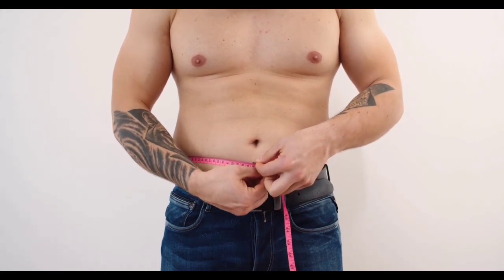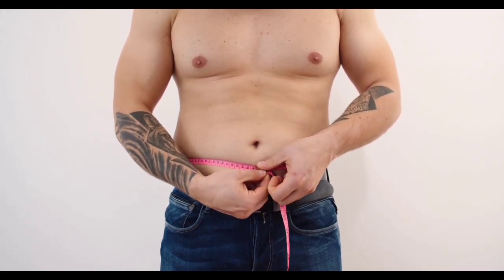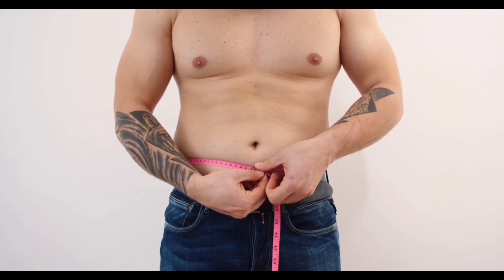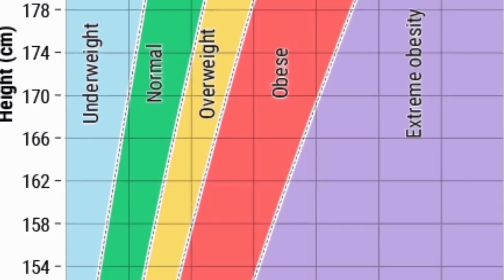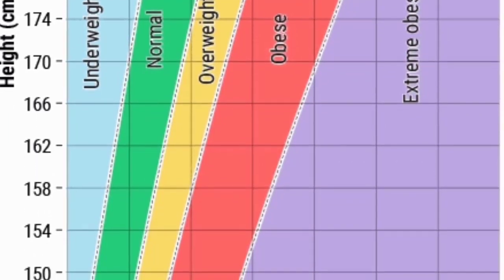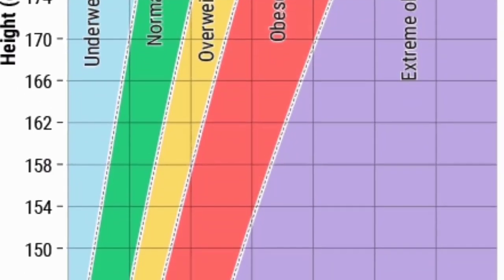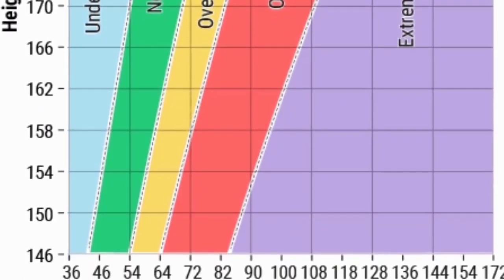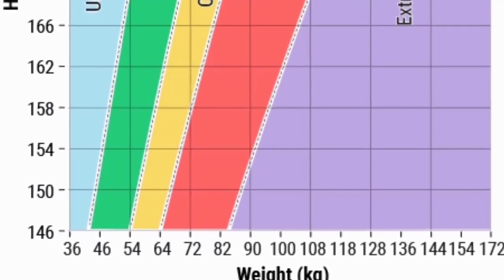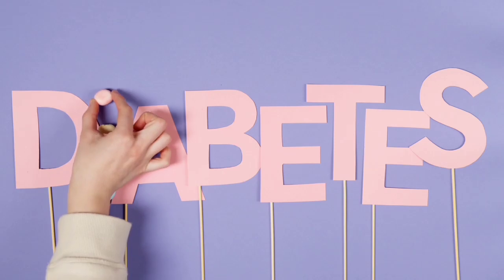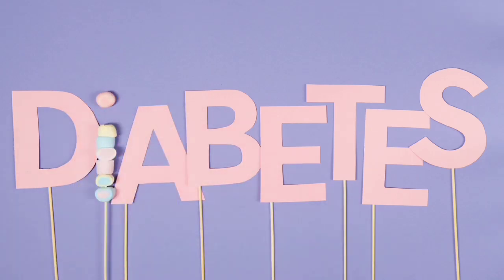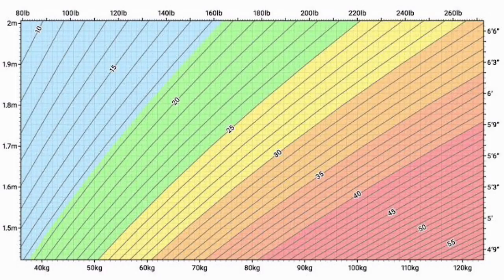Today we are discussing the symptoms and causes of obesity; solutions will be discussed in the next video. One important thing is Body Mass Index, or BMI. BMI is a calculation that takes a person's weight and height into account to measure body size in adults. Obesity is defined as having a BMI of 30 or more, and is associated with a higher risk for serious diseases such as type 2 diabetes, heart disease, and cancer.